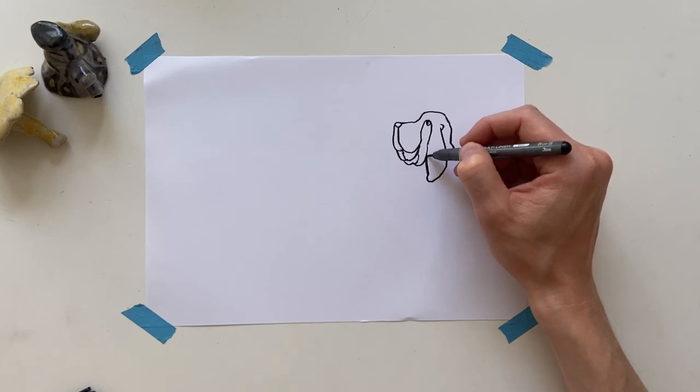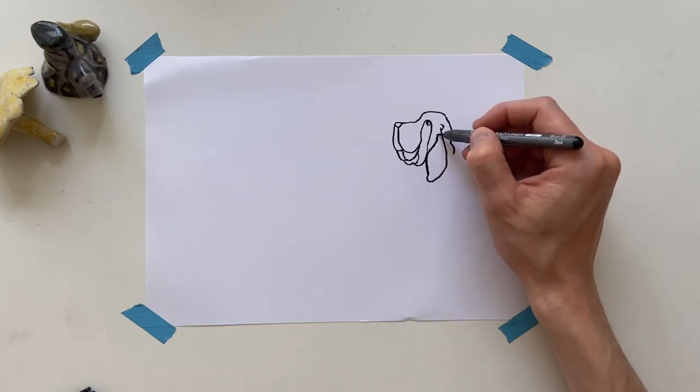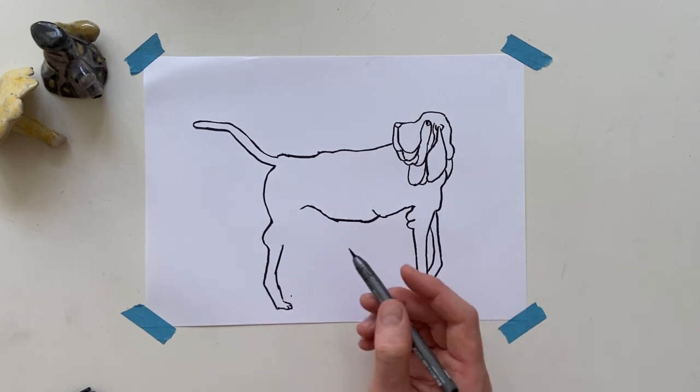Wonky lines and a wrinkly face. This is the draw along this time, as I draw a bloodhound and you're welcome to join in.